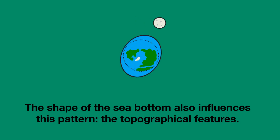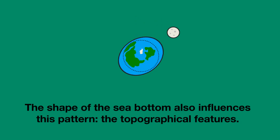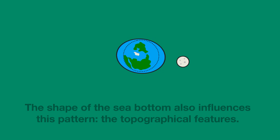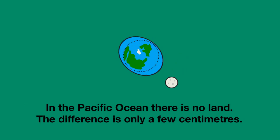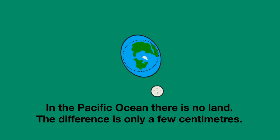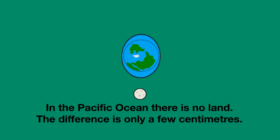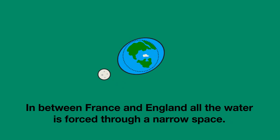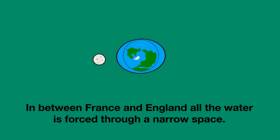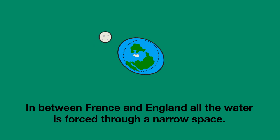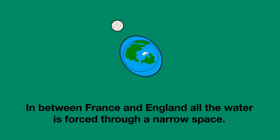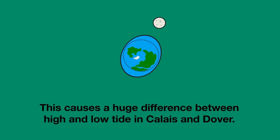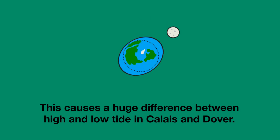The shape of the sea bottom also influences this pattern — we call this the topographical features of the sea bottom. For instance, in the Pacific Ocean there's no land, so the difference between a high and low tide is only a few centimeters. But in the small bit of sea between France and England, all the water coming from the open ocean is forced through a narrow space, causing a huge difference between high and low tide in Calais and Dover — this can be around 15 meters or even more.